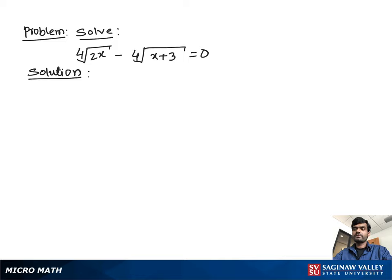Solve: fourth root of 2x minus fourth root of x plus 3 equals 0. Let's write the problem one more time. Fourth root of 2x minus fourth root of x plus 3 equals 0. Now we isolate the radical, so we can write fourth root of 2x equal to fourth root of x plus 3.